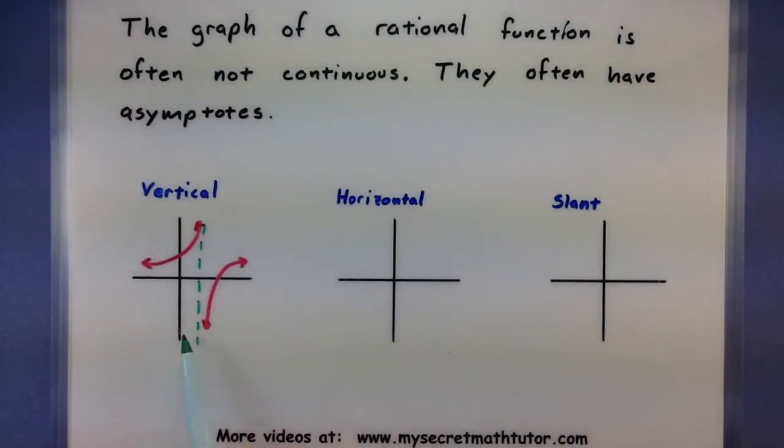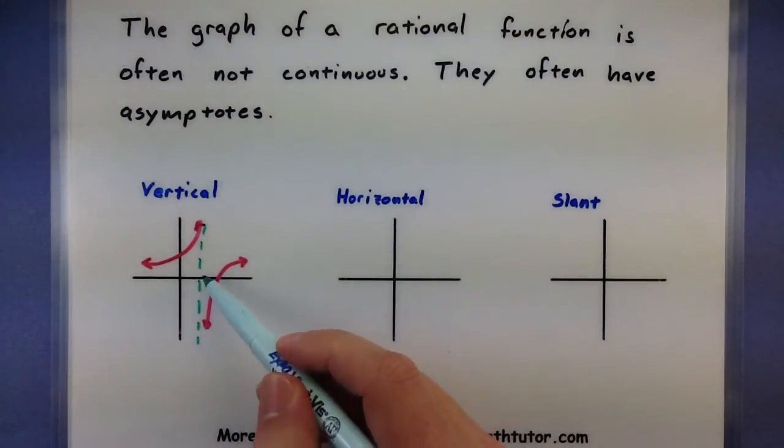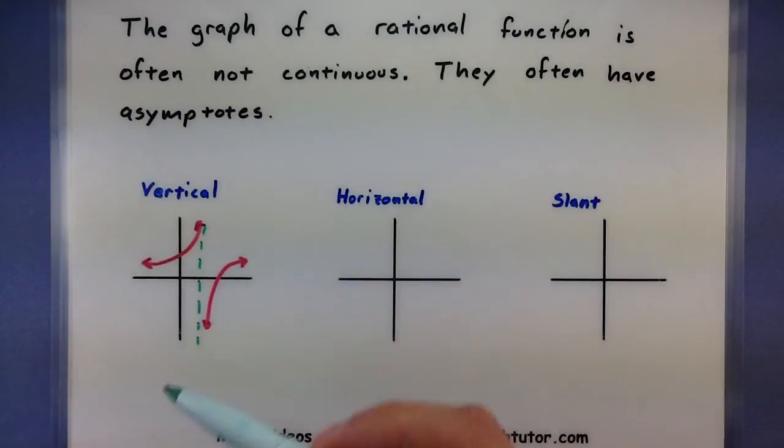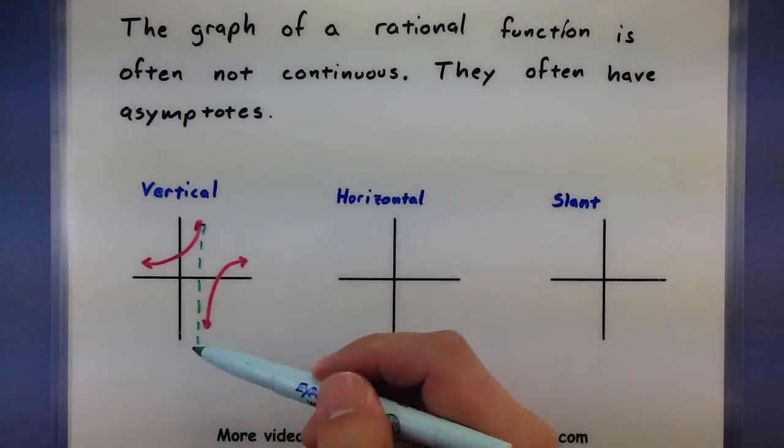And what's forming this line is that Q function in the bottom, the value would normally equal 0 at this value, but since it's not allowed to equal 0 since it is in the denominator, instead we're getting this vertical asymptote.